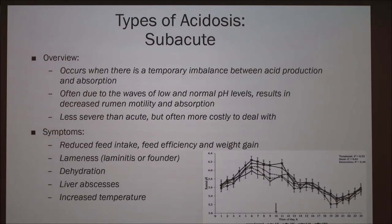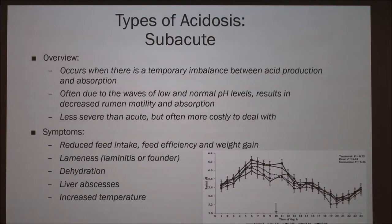The second type is subacute acidosis. It occurs when there is a temporary imbalance between acid production and the absorption of the acid, often due to waves of low and normal pH levels, resulting in decreased rumen motility and absorption. It's less severe than acute acidosis, but often more costly to deal with. Symptoms include reduced feed intake, feed efficiency, and weight gain, as well as lameness such as laminitis or founder, dehydration, liver abscesses, and increased temperature.